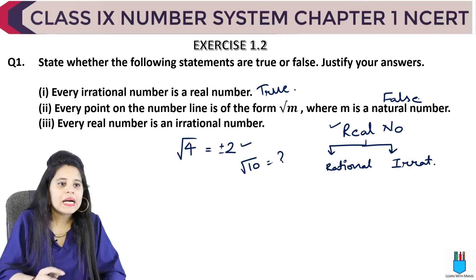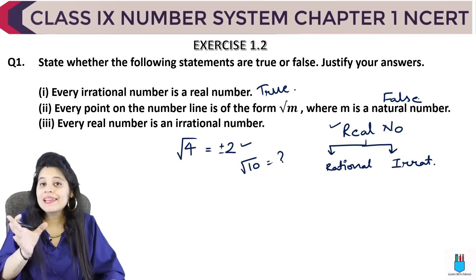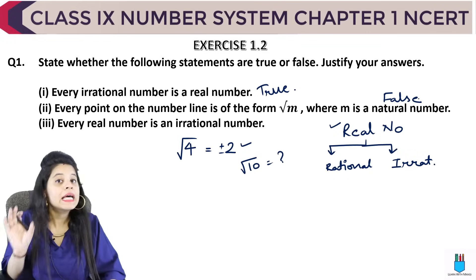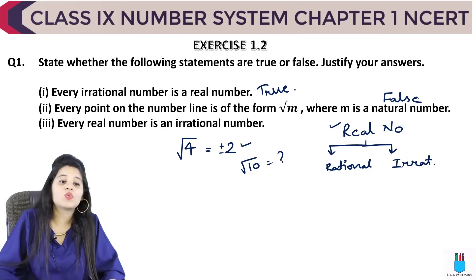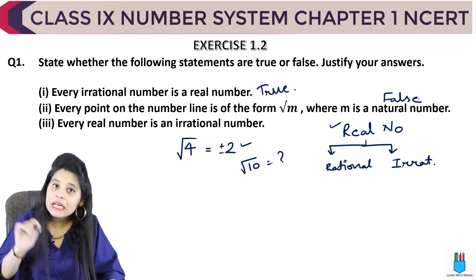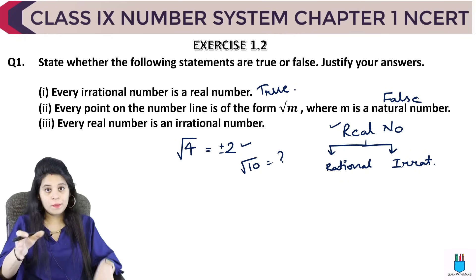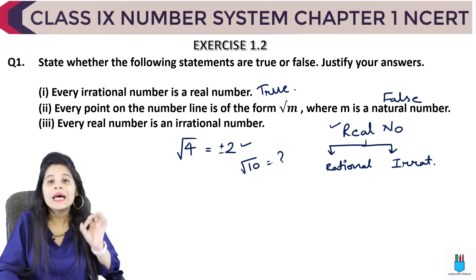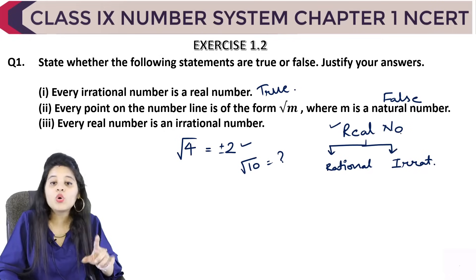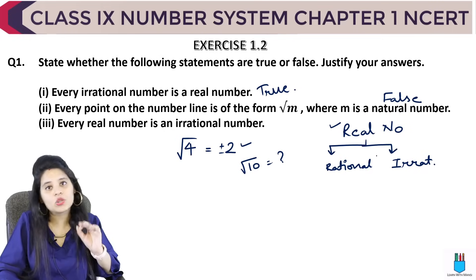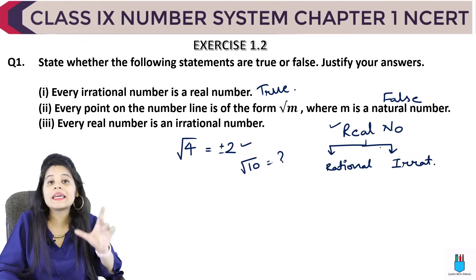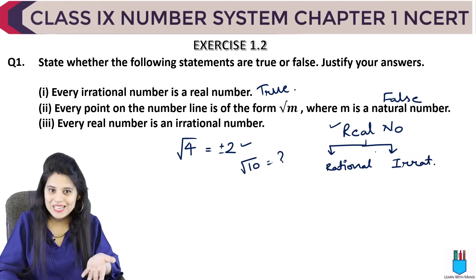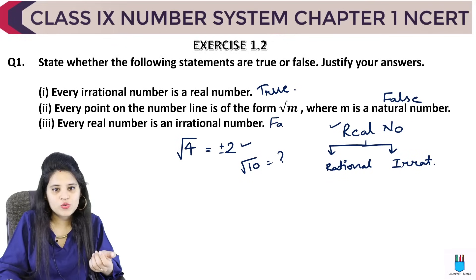Coming to the third one: every real number is an irrational number. The first statement said every irrational number is a real number, but here it says every real number is irrational. We have learned that real numbers include both rational and irrational numbers, so it is not necessary that every real number is irrational. So this statement is also FALSE.